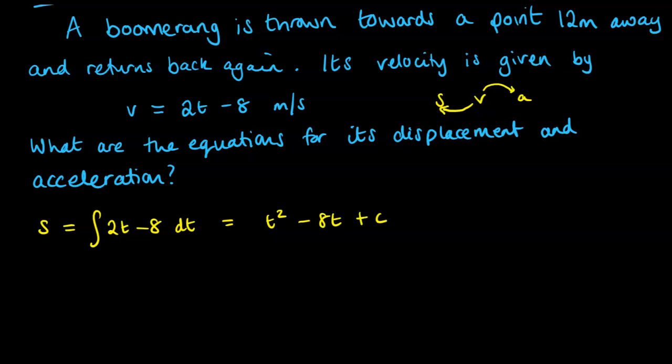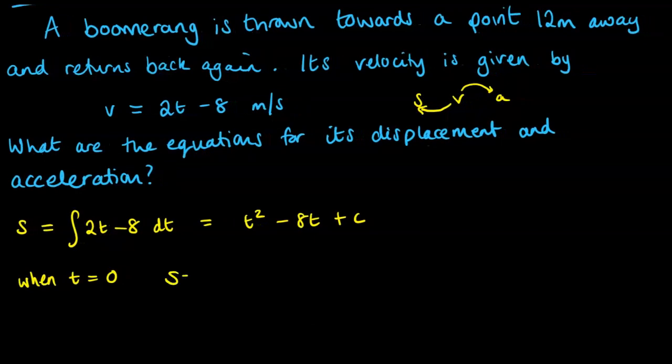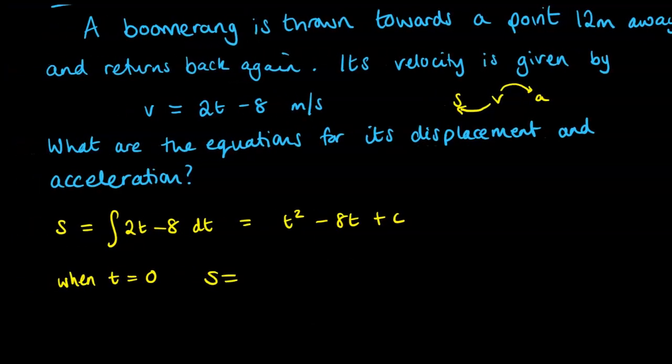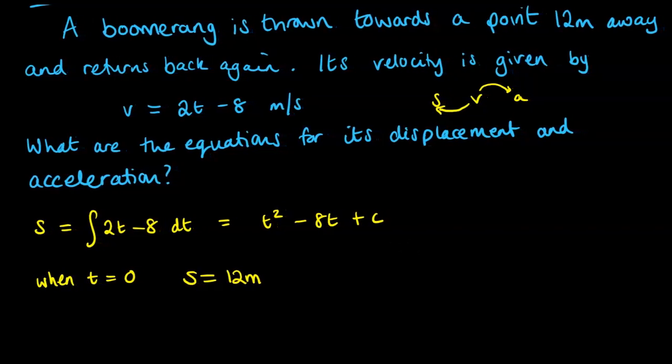So if we're throwing this boomerang away from us towards this fixed point, then we can set this equation as being the displacement from the fixed point. So when t is 0, s will be 12 meters. So it'll be 12 meters away from our fixed point of the boomerang.